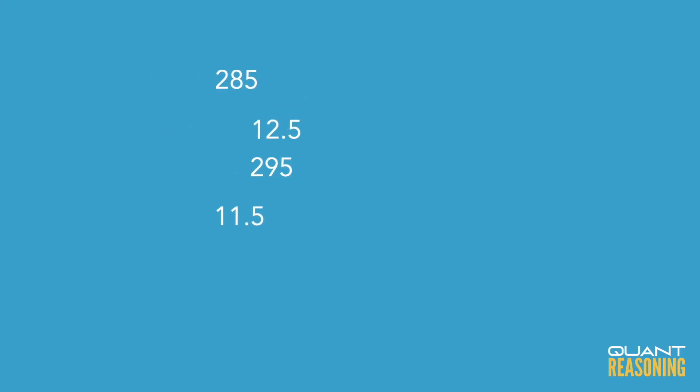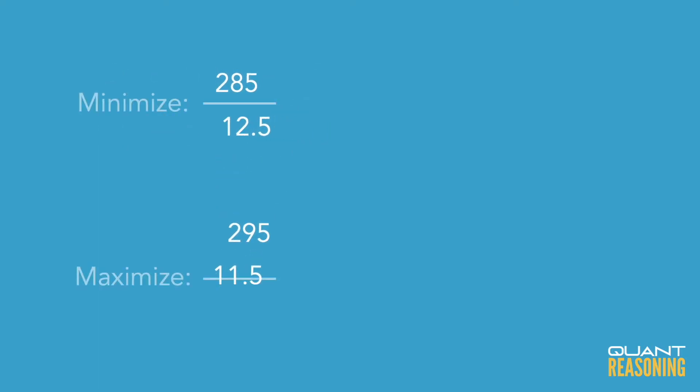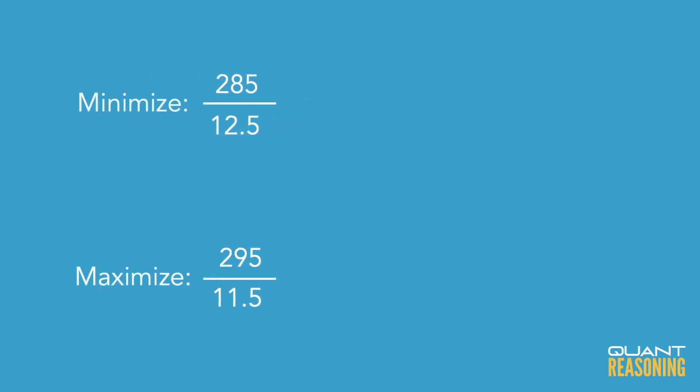To maximize the ratio, it's the other way around — we want the largest possible numerator with the smallest possible denominator. So that would be 295 over 11.5. And that takes us to answer choice D.